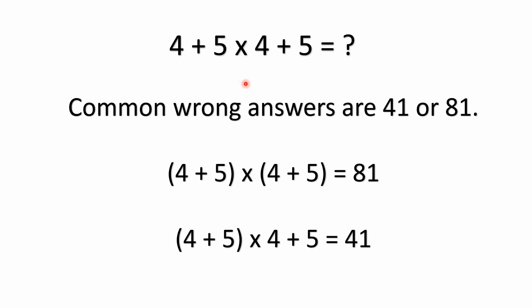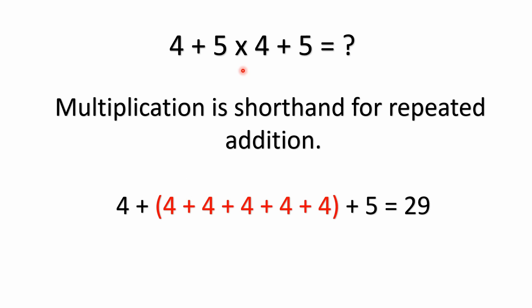So you follow the order of operations, which says you start with multiplication. A lot of people will ask: why wouldn't it just be written 5 times 4, then plus 4, plus 5 — in the order you're supposed to do it? Well, it's not like reading a sentence left to right; we're solving an equation. Multiplication is shorthand for repeated addition. You can take this 5 times 4 and replace it with addition: 5 fours is 4 plus 4 plus 4 plus 4 plus 4. Adding those up: 8, 12, 16, 20, 24, then plus 5 gives you 29. So you have to resolve that shorthand before doing anything else — this is why multiplication has precedence.